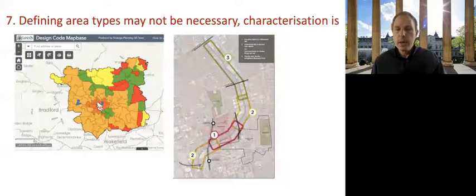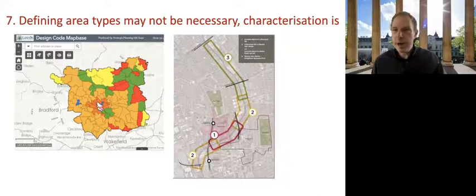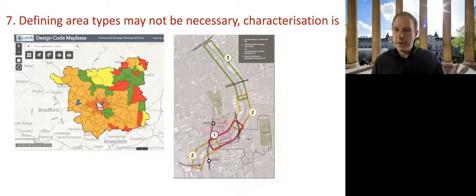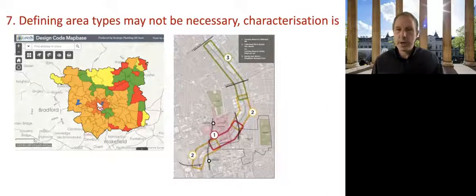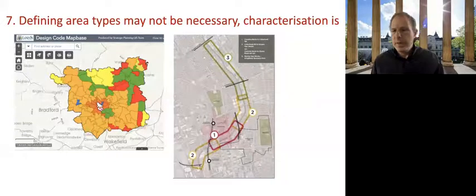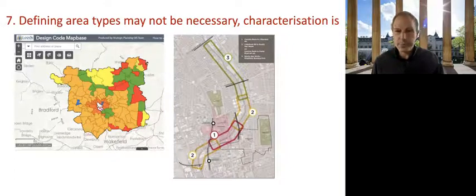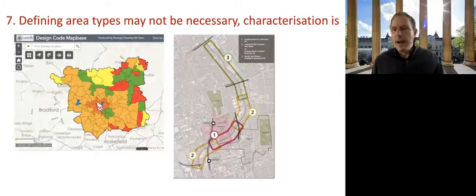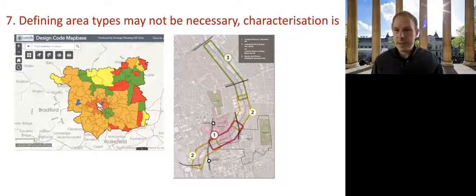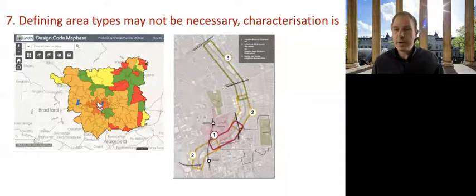Coming to a particularly important finding, the pilots demonstrated that the use of area types which is part of the national model design code methodology was not always appropriate in their views notably in relation to coding conducted for areas of very unified or even negative quality, for site specific coding or in relation to authority wide guides dealing with generic principles. Pilots struggled with area types and in fact most ignored this aspect of the national model design code process in part because of the time constraints they were under. You'll remember that the first pilot only had six months.